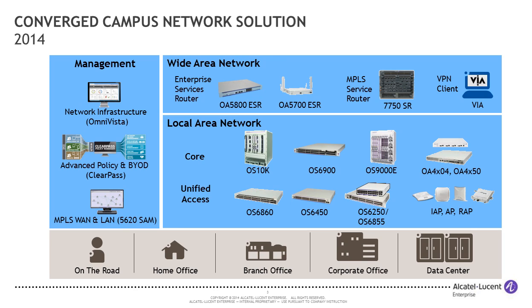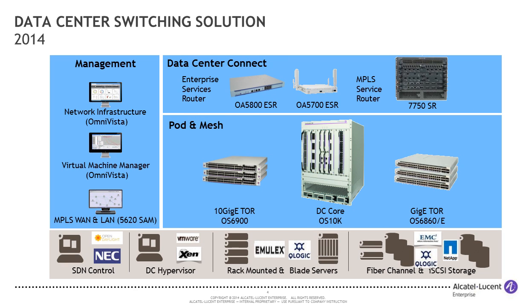On the data center switching side, you'll notice the same products showing up again. The pod and mesh architecture is built by the OmniSwitch 6900 and 6860, and can be aggregated by our chassis-based OmniSwitch 10K in the core. We have a very open solution working with a number of different SDN controllers and data center hypervisors. We recently added Fibre Channel support, so we're starting to see the convergence of storage and compute being delivered on the same platforms.